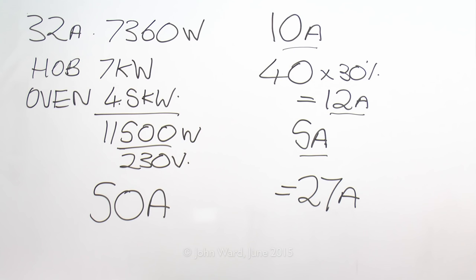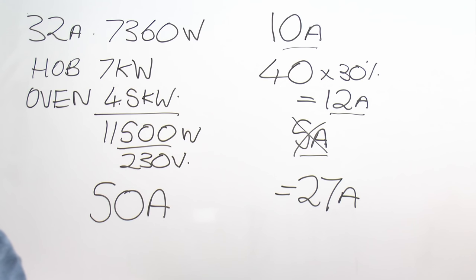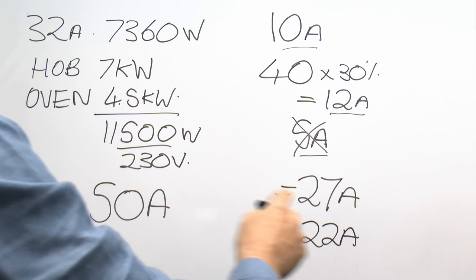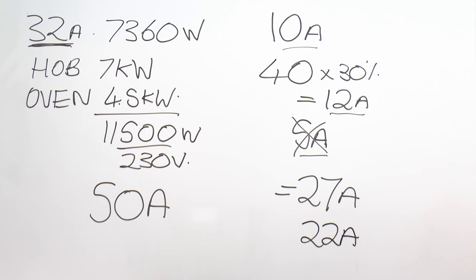If the calculated figure approached the 32A limit, simply removing the socket outlet from the cooker control unit saves another 5A — bringing it to 22A, a full 10A below the circuit breaker rating. It doesn't matter whether it's a freestanding cooker, a separate hob and double oven, or a hob with two single ovens — the same principle applies: add up the total ratings and apply the formula.